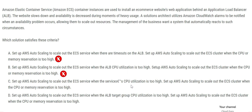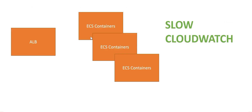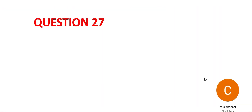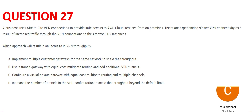Option C is correct because it will create a scale-out based on the CPU utilization of the ECS service. Option D is wrong because it again references ALB target group CPU utilization. You don't have to do anything at the ALB level — your answer has to be something related to the ECS service. So D is wrong and C is correct. Let's look at question 27, which is linked to a VPN.